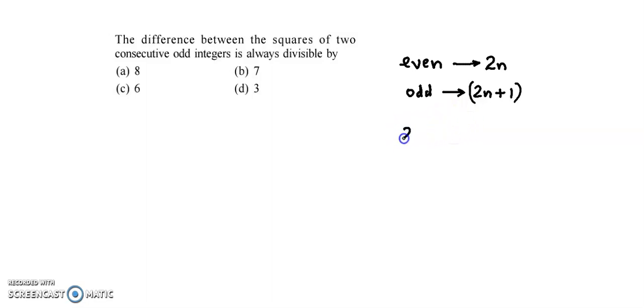So if our first odd integer is 2n plus 1, then the next one would be 2n plus 3, because the difference between odd values and even values is 2. So if this is 2n plus 1, the next would be 2n plus 3. Now the condition given here is the difference between the squares of these two numbers.